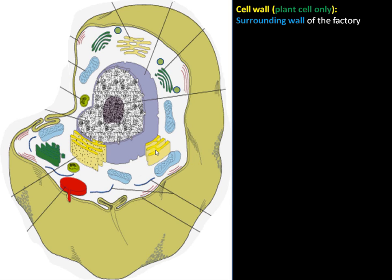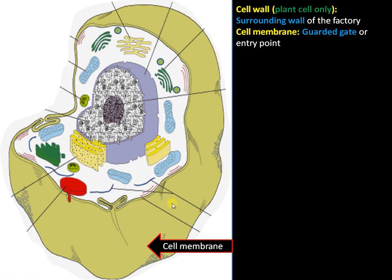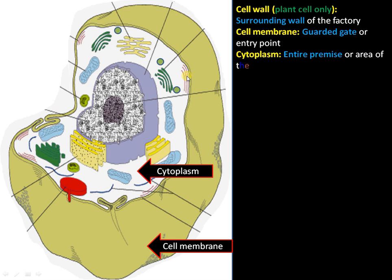The cell wall prevents intruder entry and offers protection to the inner structure. In the case of an animal cell, the outermost boundary is a cell membrane or plasma membrane — cell wall is absent. The cell membrane can be considered as a guarded gate, as it is selectively permeable, allowing only certain molecules to pass through, where credentials are checked before entry into the factory.